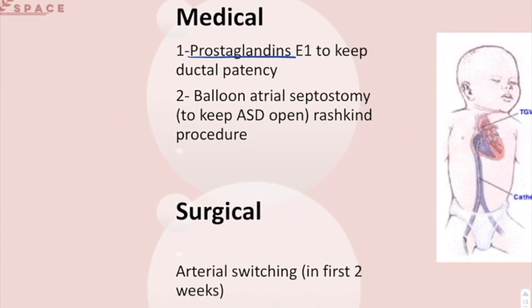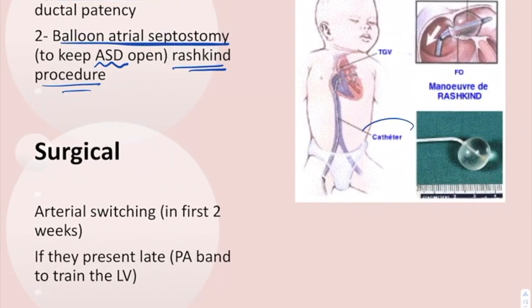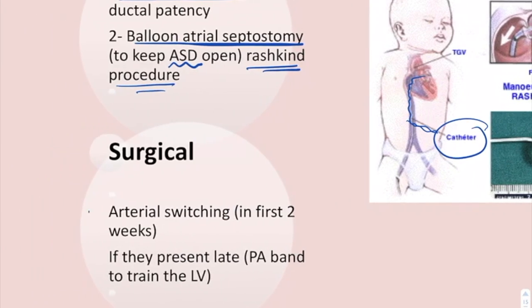The medical treatment is prostaglandin E1 to keep the patent ductus arteriosus open. The surgical treatment includes balloon atrial septostomy — the Rashkind procedure — which keeps the atrial septal defect open and is performed through a catheter with a balloon. The definitive surgical treatment is arterial switching, performed within the first two weeks of life.